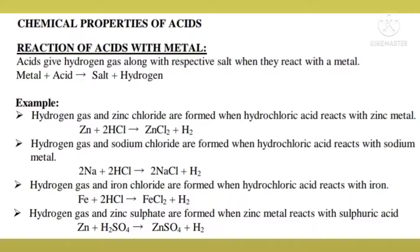When a metal reacts with an acid, the products formed are a salt and hydrogen gas. For example: zinc plus hydrochloric acid forms zinc chloride and releases hydrogen gas. Sodium plus hydrochloric acid forms sodium chloride and hydrogen gas. Iron plus hydrochloric acid forms iron chloride (ferric chloride) and hydrogen gas. Zinc plus sulfuric acid forms zinc sulfate and hydrogen gas.